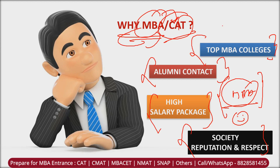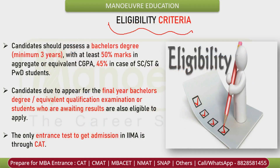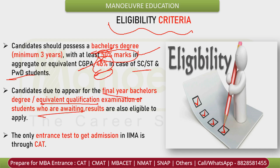If you get a good percentile in CAT you will get a good college, so make sure your percentile is good and preparation is strong. Regarding eligibility — you need to know if you are eligible or not. If you have 50% in graduation you are eligible. If you are in a reserved category, 45% minimum in graduation is required. Your stream — science, commerce, or engineering — doesn't matter.